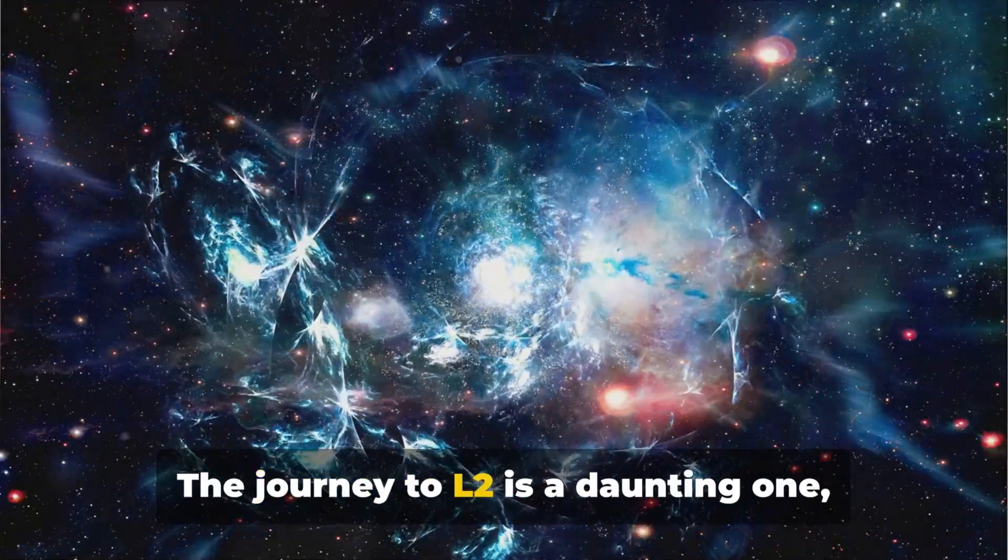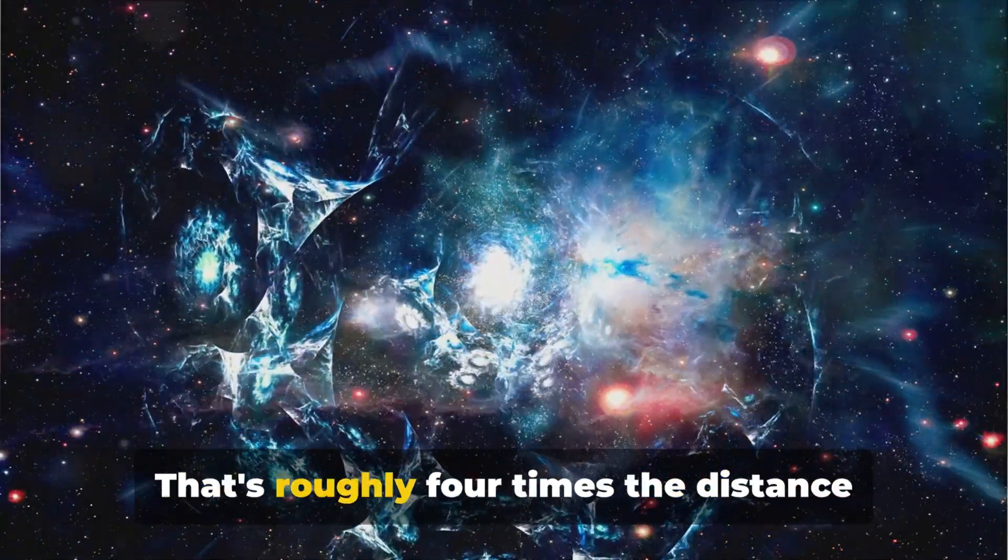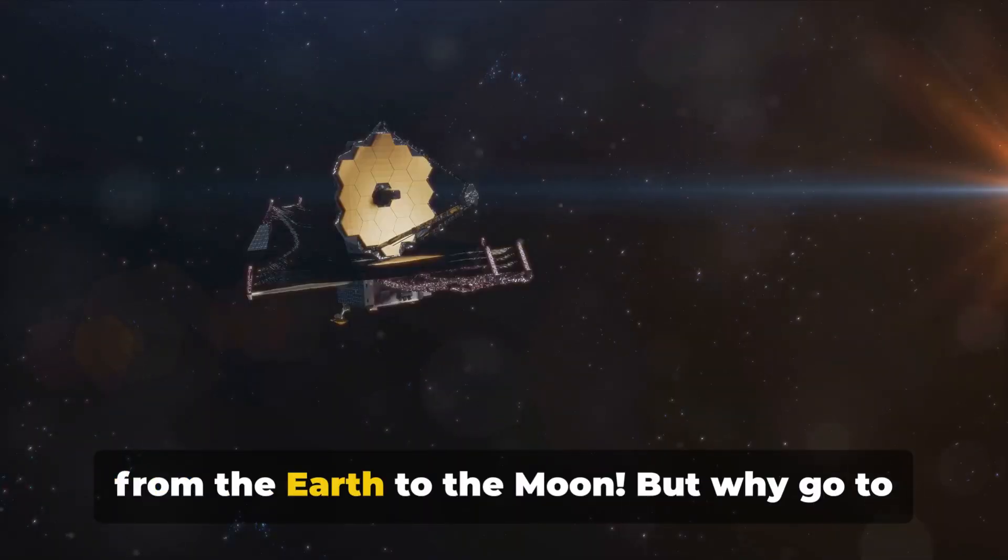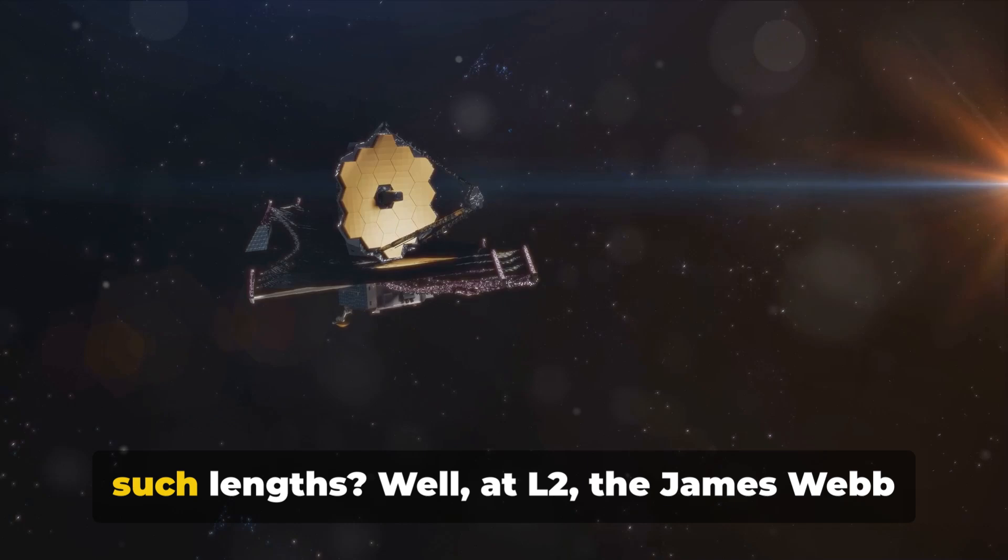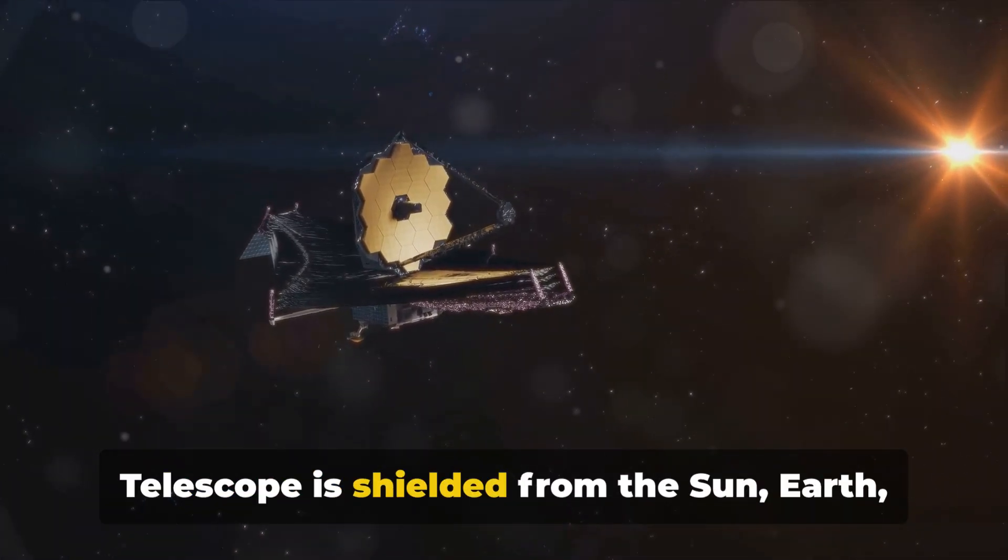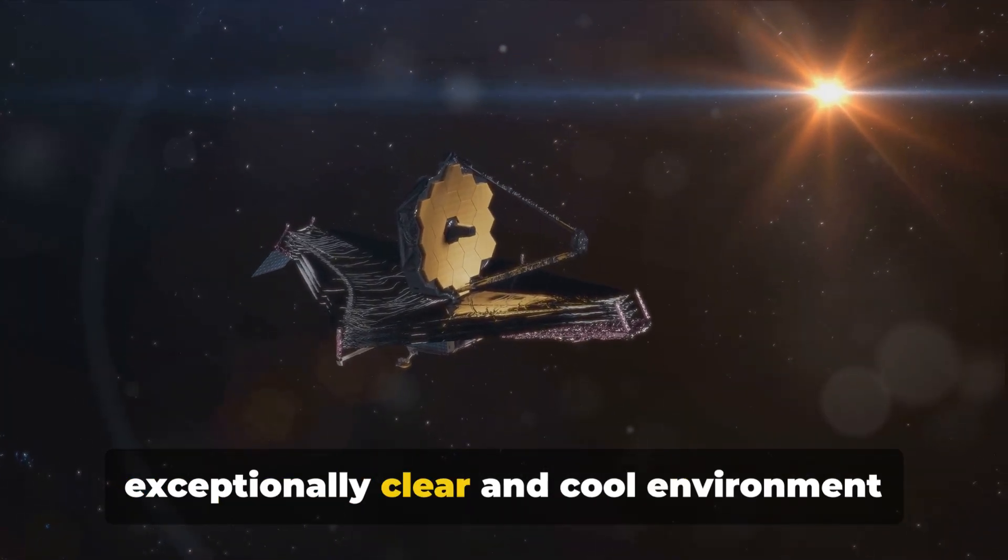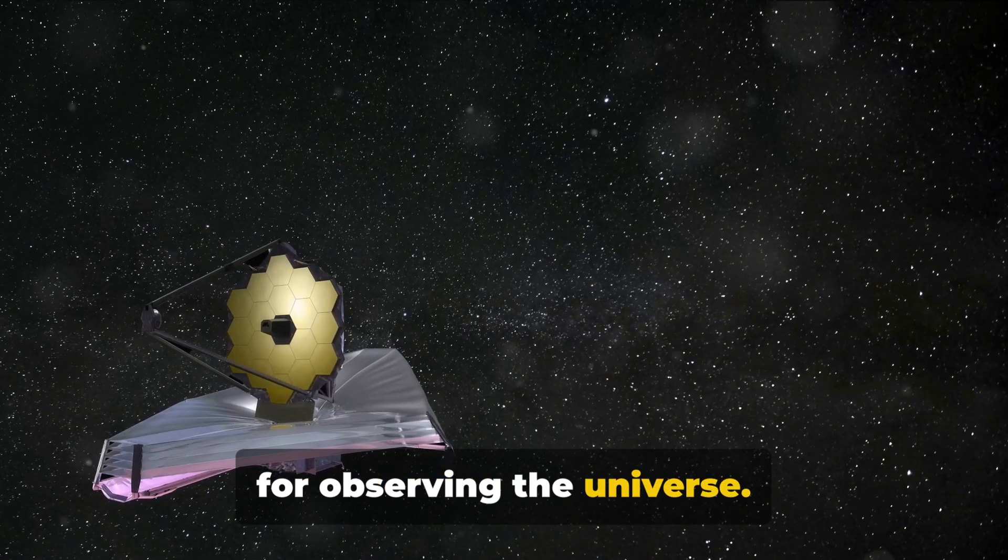The journey to L2 is a daunting one, covering a distance of about one million miles, that's roughly four times the distance from the Earth to the Moon. But why go to such lengths? Well, at L2, the James Webb Telescope is shielded from the Sun, Earth, and Moon's light and heat, providing an exceptionally clear and cool environment for observing the universe.